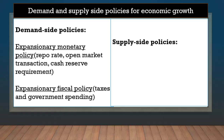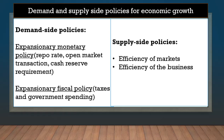I'm not going to get into these policies in this video — please see the business cycles part two video where I explain these policies in detail. Demand-side policy has to do with expansionary monetary policy or expansionary fiscal policy. Supply-side policy, on the other hand, has to do with efficiency — efficiency of markets, which must become more efficient in order to grow the economy, and efficiency of businesses, which must also become more efficient.